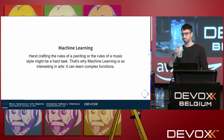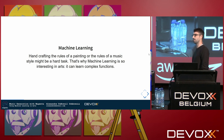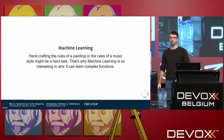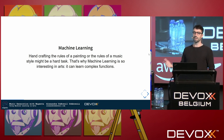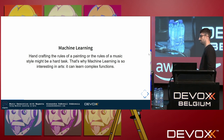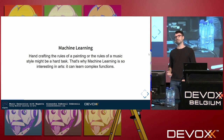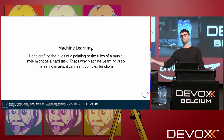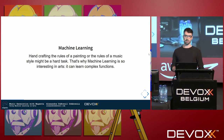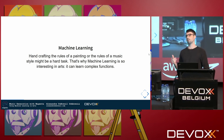So where does machine learning sit in music generation? Handcrafting the rules of a painting or a musical style is kind of hard. Music has been theorized before, but really knowing what are the rules for good music is very hard. What is nice about machine learning is that you can just throw data at it and it should normally learn some stuff about the general structure of the music. It can learn complex functions, so for music generation it's really interesting.